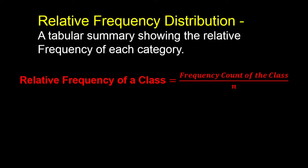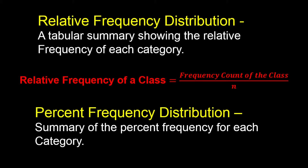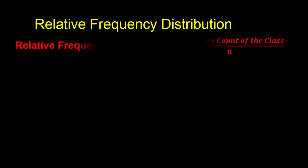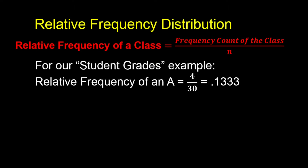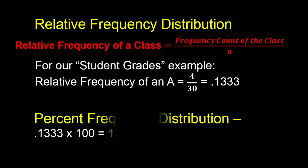This relative frequency gives us the proportion instead of the frequency count. We can turn that relative frequency, or proportion, into a percentage by multiplying by 100, or moving the decimal place over two spaces. So for our example of 30 students, there were four students who received an A, so the relative frequency for grade A would be 4 divided by 30, or 0.1333. To convert this to a percentage, we multiply 0.1333 by 100 and get 13.33%.